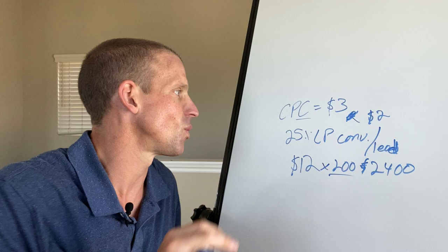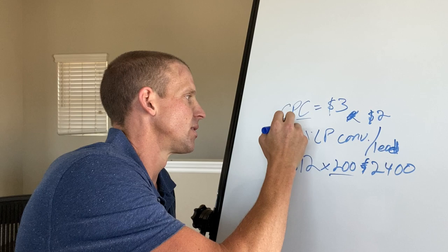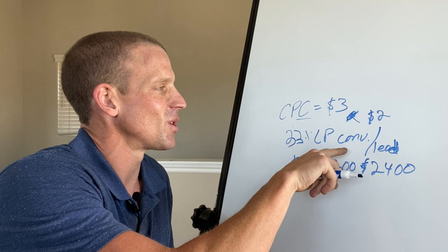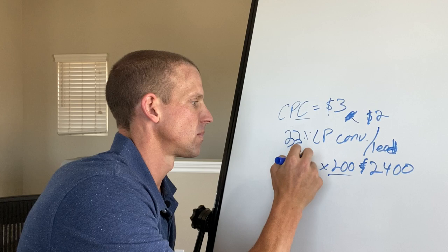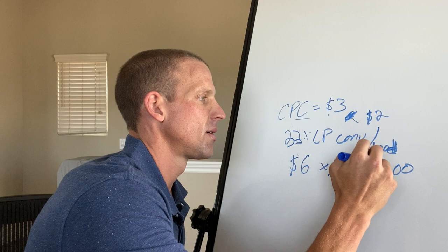Let's call it 33% landing page conversion rate to make the numbers a little easier. At 33% and $2 per click, one in three clicks is a lead, so that's $6 a lead — meaning $1,200 a month in spend to make $10,000. That sounds a lot better.